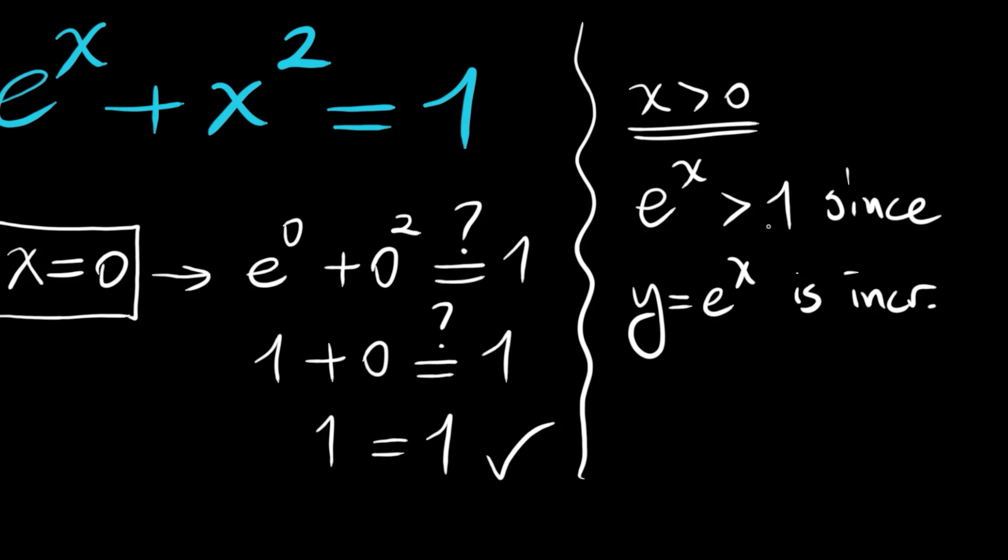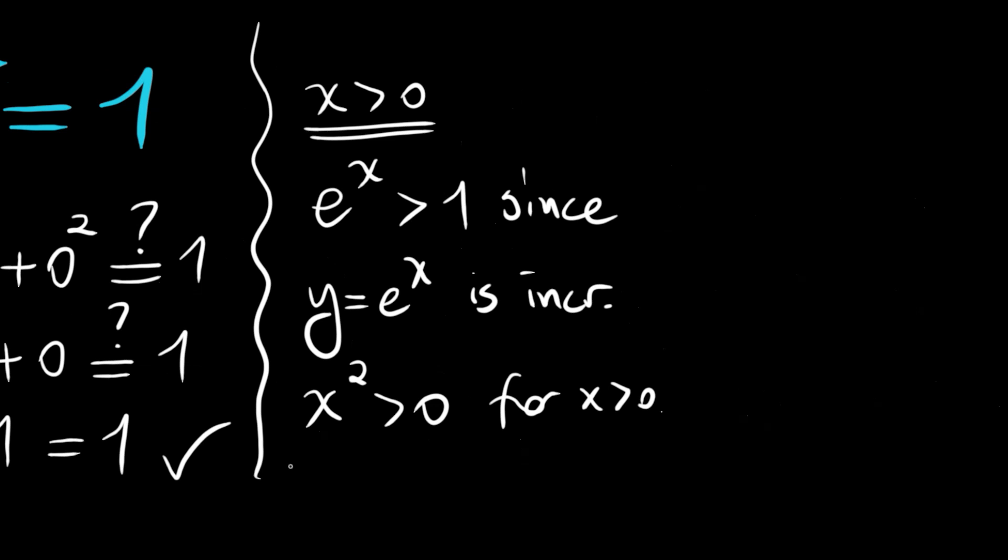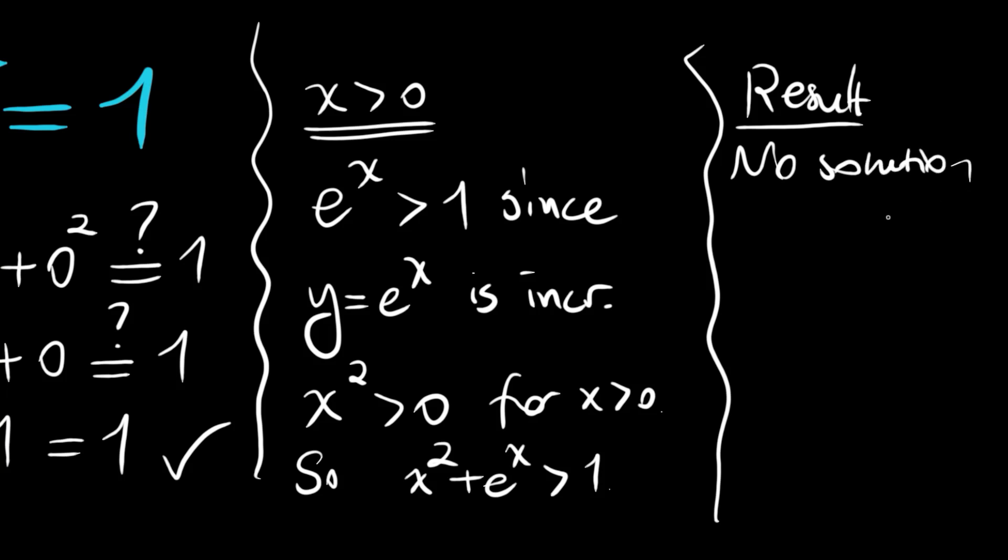And x^2 is also greater than 0 for x greater than 0. So e^x + x^2 is greater than 1. So no solution. The result here is no solution if x is greater than 0, x is positive.